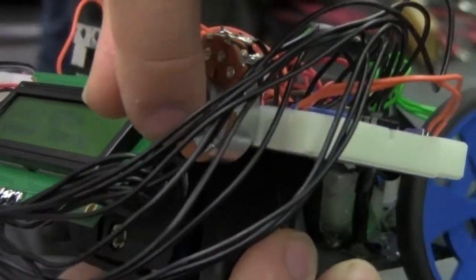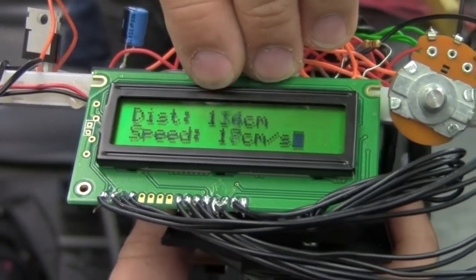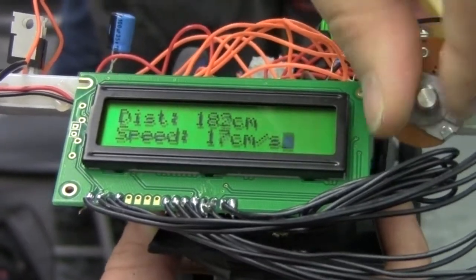This is the 50% speed right here. You can see how it's marking the speed in centimeters a second, and then also the distance as well.